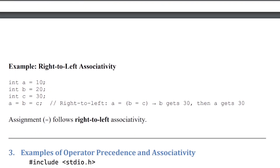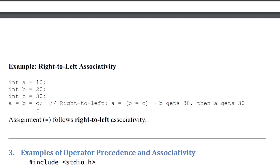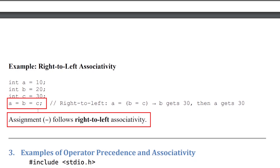Consider: A = 10, B = 20, C = 30. The expression is A = B = C. For the assignment operator, the associativity is right to left. So C's value (30) is first passed to B, giving B = 30. Then that 30 is passed to A, so A = 30.